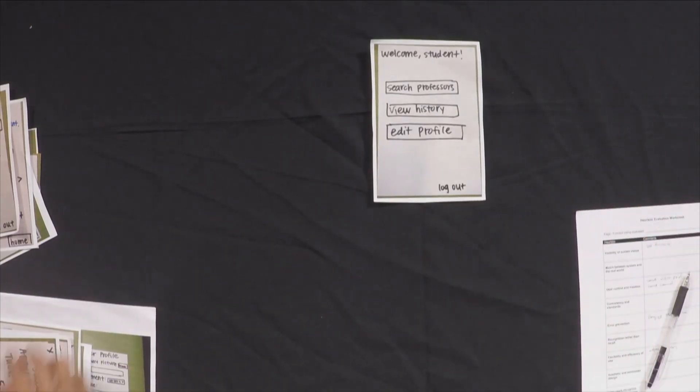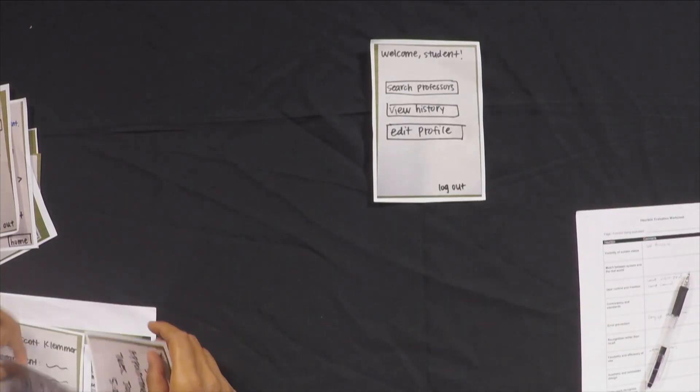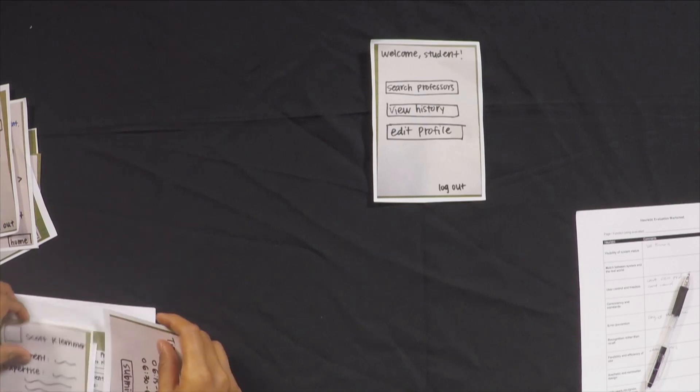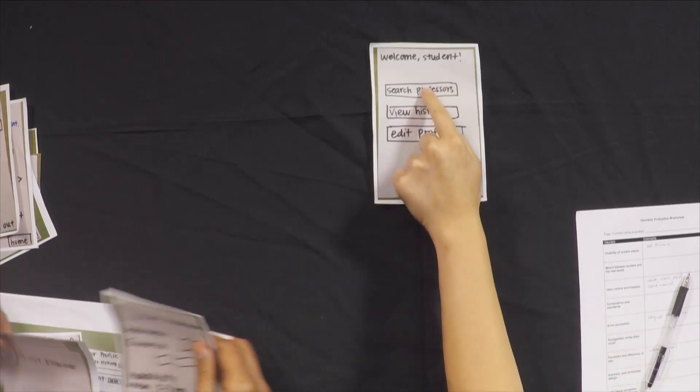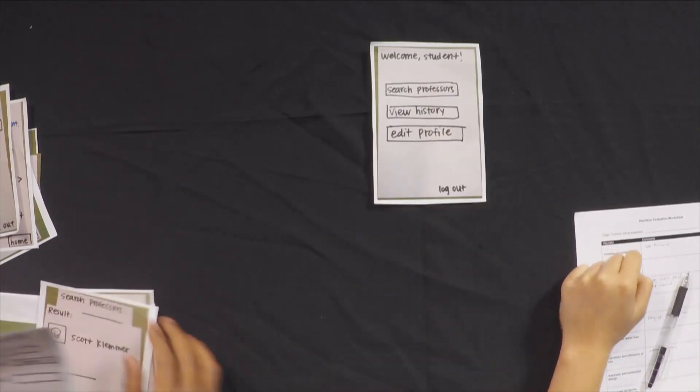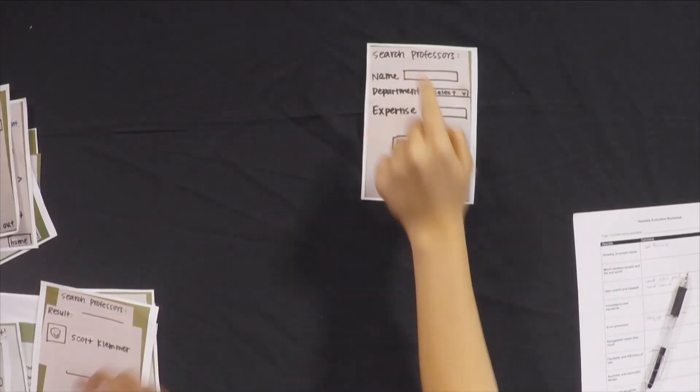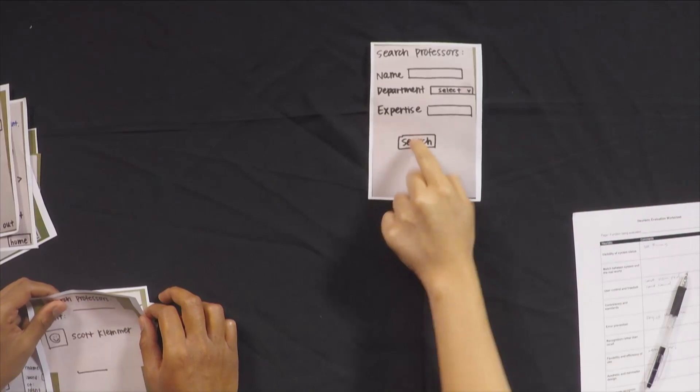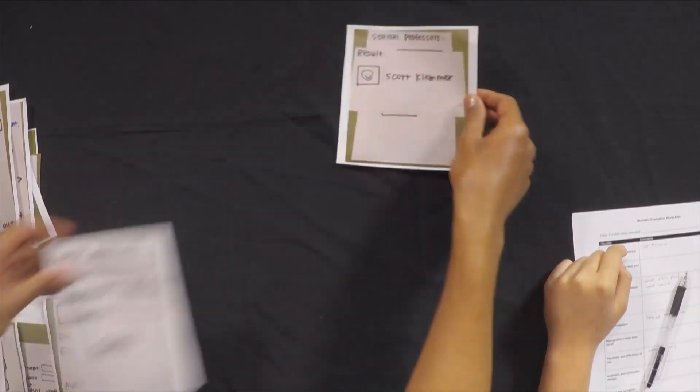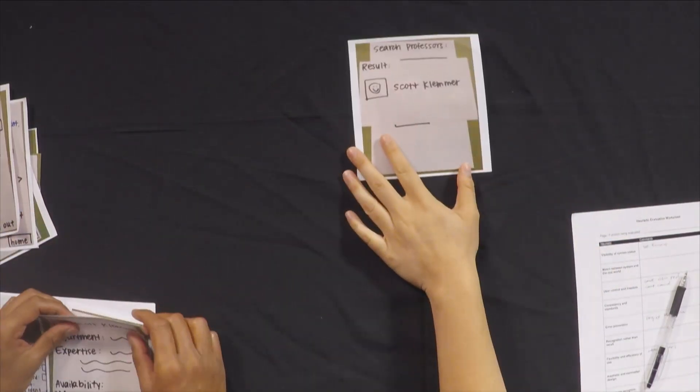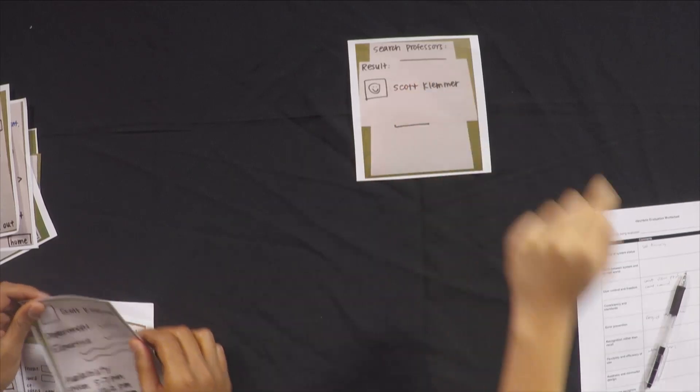All right. So here I want to make an appointment with a professor. So I'll search for the professor that I want. Let's see. I'll just add the name Scott Clemmer. Oh, and I found Scott Clemmer. So I'll click on that.